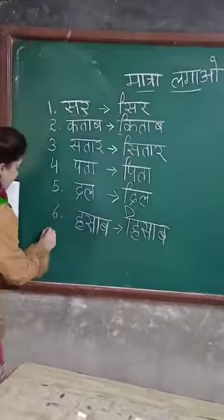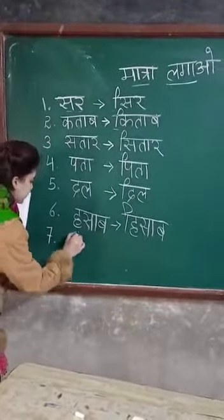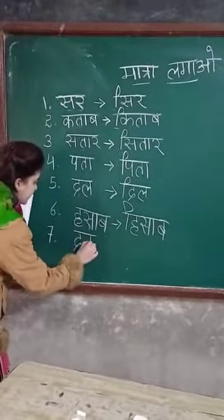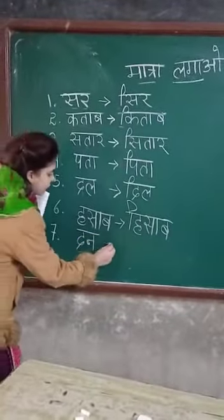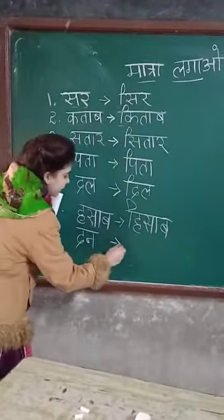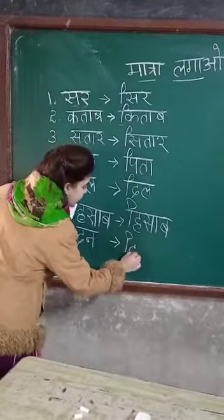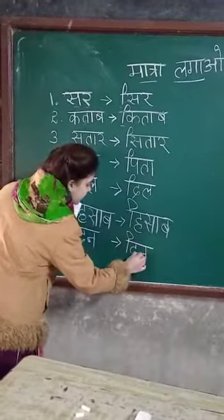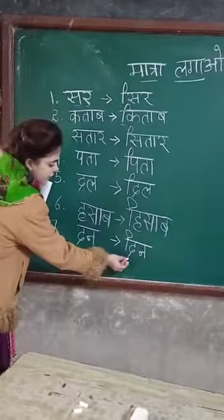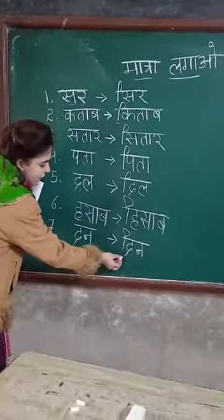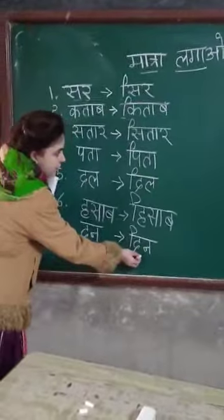Now our seventh word is Da, na — dan. It will change into Din. Da, ko chhoti ee — di, na — din. Okay? Da, ko chhoti ee, di, na — din.